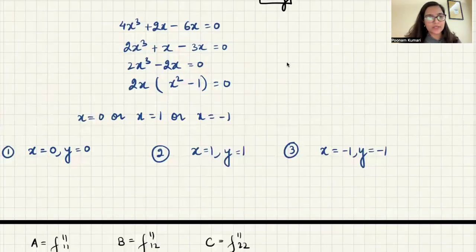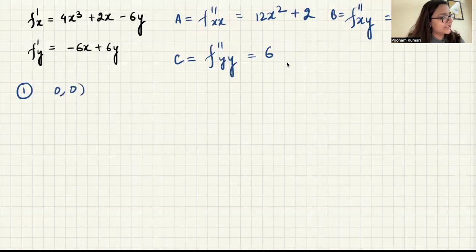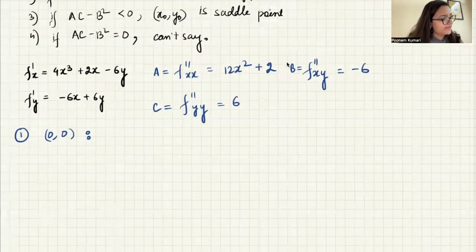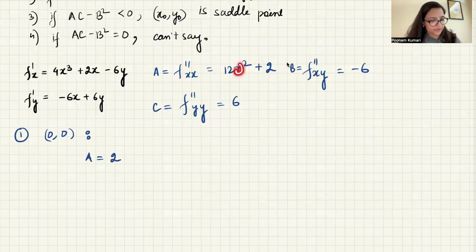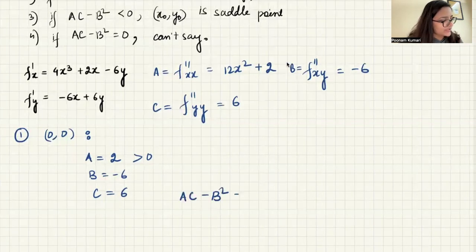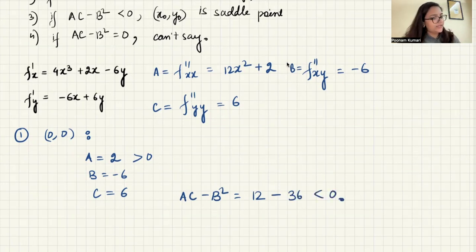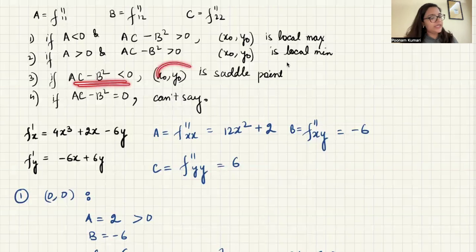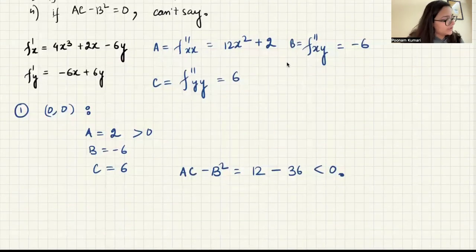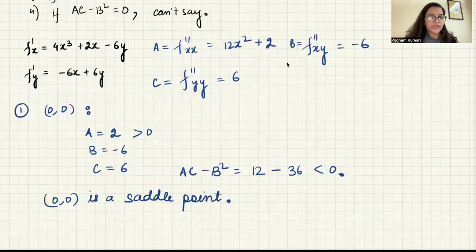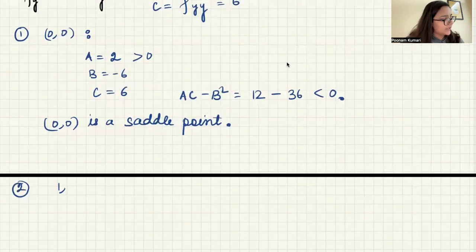For the first stationary point (0, 0): a = 2 (putting x = 0), b = −6, c = 6. ac − b² = 2×6 − 36 = 12 − 36 = −24, which is less than zero. Since ac − b² < 0, this point is a saddle point. So (0, 0) is a saddle point.